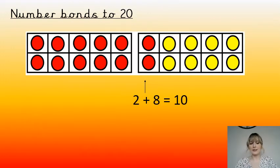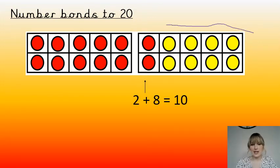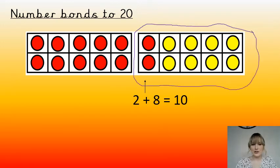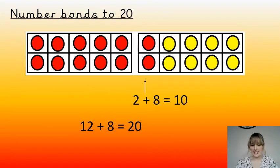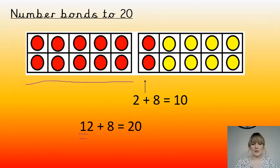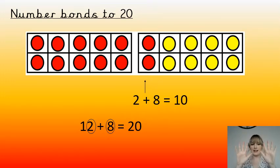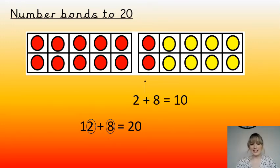Let's look at the next one then. We've got 2 and 8 is 10 — this 10-frame here shows 2 and 8 is 10. But we've got an extra 10 here. So if we know that 2 and 8 is 10, then 12 and 8 is going to be 20 because we've got that extra 10 value. We can see that the 2 and the 8 are 10 and the other 10 makes 20. So 2 and 8 is 10, so 12 and 8 is 20.